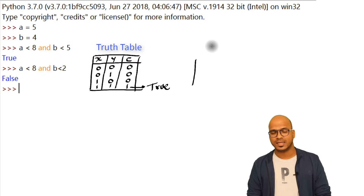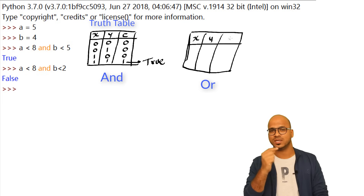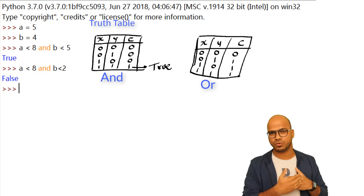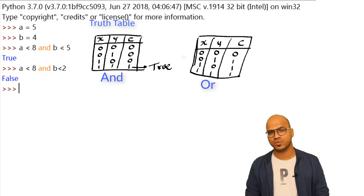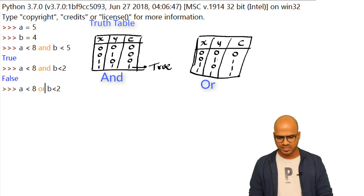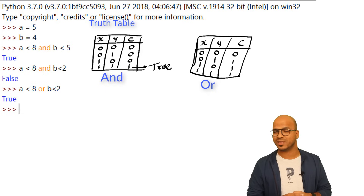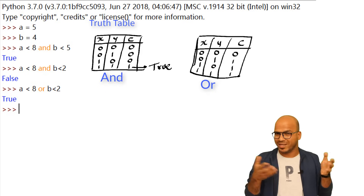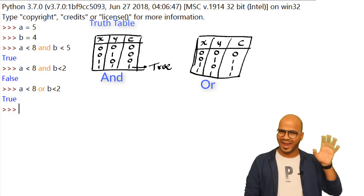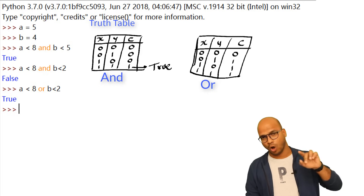For 'or', the truth table works differently — if at least one condition is true, the result is true. So if the first condition is true and the second is false, using 'or' still gives you true. That's the key difference between 'and' and 'or'.